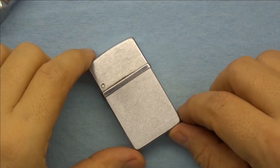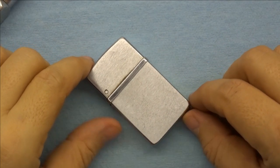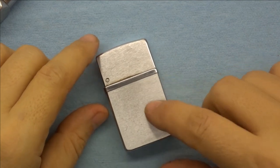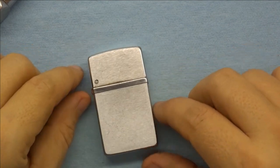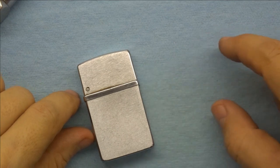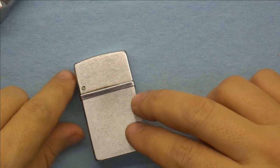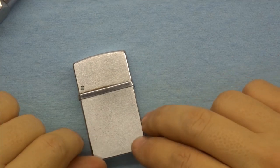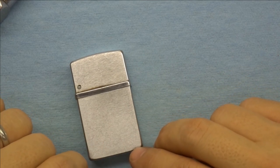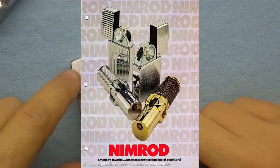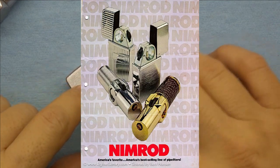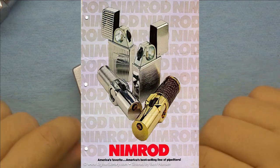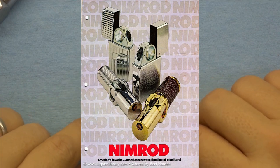The other lighter that I have here is the Nimrod Commander. Now the Commander is done in a satin finish and there's a companion higher end lighter in this form which is called the Admiral and the Admiral is they term it an engine turned chrome finish. It's basically chrome and it's got some ribbing in it and I'll put pictures in here so you can see all of them.